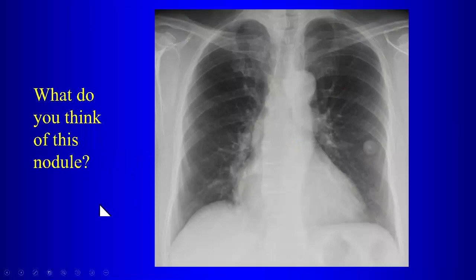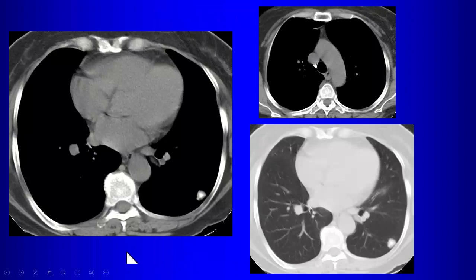Here we have a nodule with central calcification — that's a granuloma, and does not require further workup. There's another finding here that increases confidence: a calcified lymph node — the right paratracheal node. When you have a calcified parenchymal abnormality associated with a calcified lymph node from tuberculosis, that's a Ranke complex. The Ghon focus is the parenchymal abnormality; the Ranke complex includes the parenchymal abnormality associated with the abnormal lymph node.